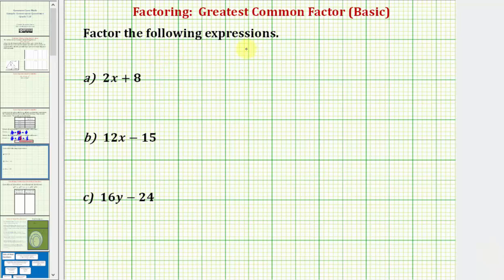We're asked to factor each expression by factoring out the greatest common factor. The greatest common factor of an expression would be a term that contains the most number of common factors among all the terms. So to factor 2x + 8, we want to find the greatest common factor of 2x and 8 and then write this as a product.